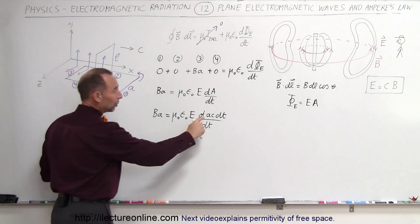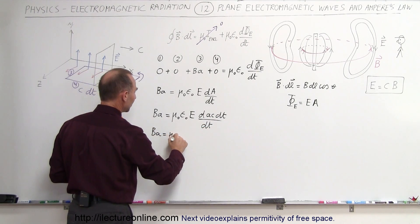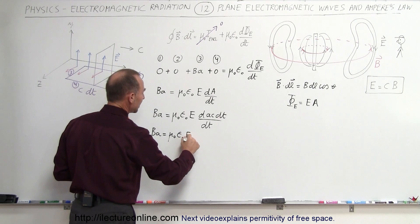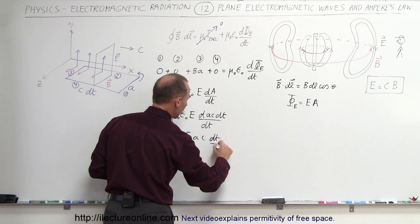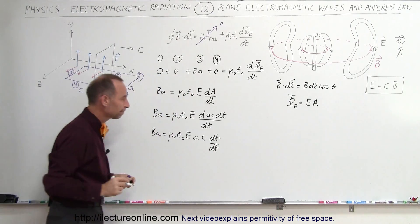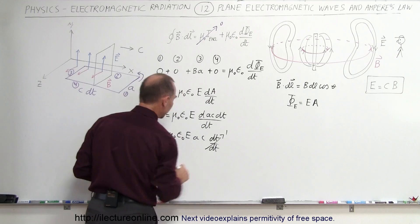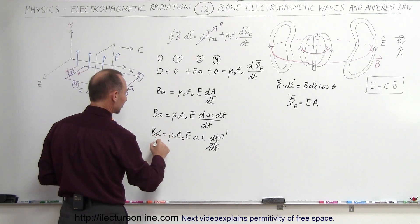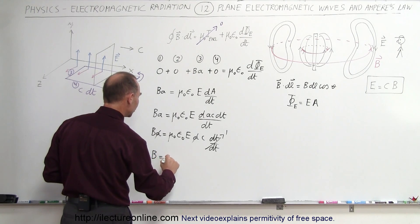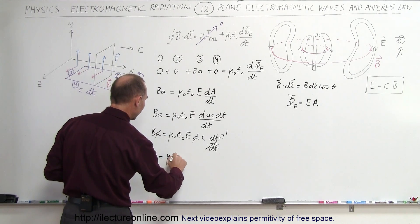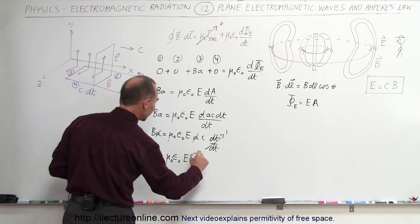Notice that A and C will be constants, so this can be written as B times A equals μ₀ε₀ times E times A times C times dt over dt. Of course, dt divided by dt equals 1. And notice we have an A on both sides, so that cancels out. Now what we have is that the magnetic field strength B equals μ₀ε₀ times E times C.